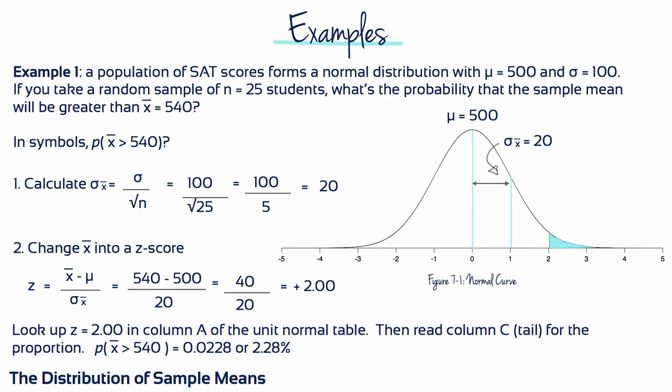This means that if you choose a random sample of 25 students, there's only a 2.28% probability that their SAT scores are going to have a sample mean greater than 540.